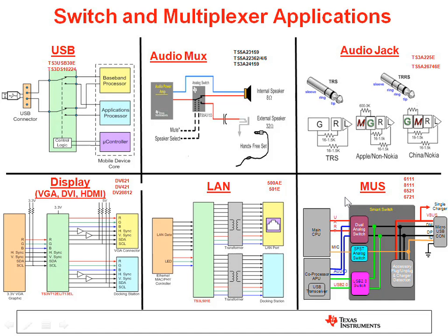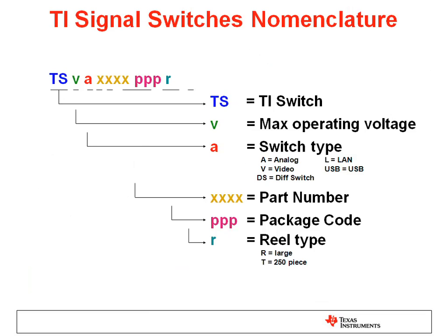The naming convention for TI switches is very simple. The TS indicates a TI switch. The V indicates the maximum operating voltage, which could be 3, 5, 12 volts or something else. The A represents the switch type: capital A could mean analog, capital V could be video, DS a differential switch, L for LAN, and USB for USB switches. The 4Xs represent the part number, and the 3Ps represent the package code. The lowercase R represents the reel type; a large R represents a large reel, and a capital T represents a 250-piece reel.